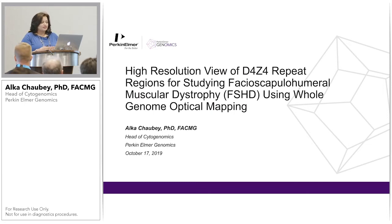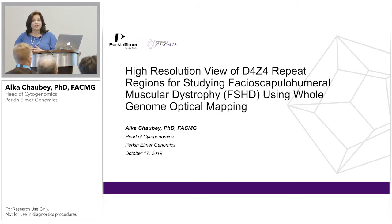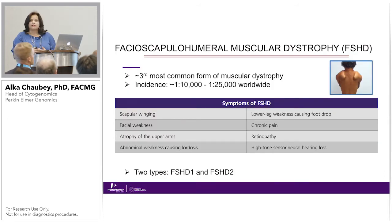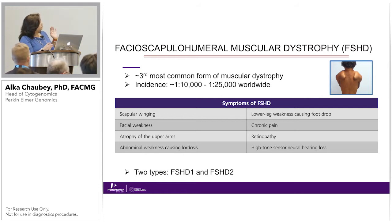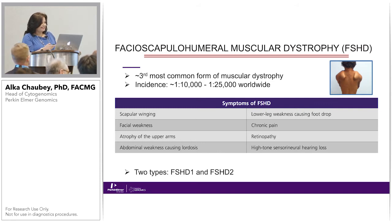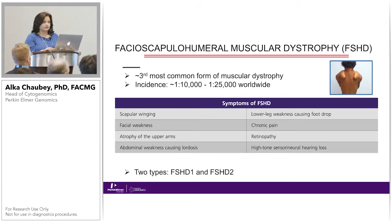Facioscapulohumeral muscular dystrophy — and for the remainder of the talk I will just say FSHD — is the third most common form of muscular dystrophy, and the incidence is comparable with a lot of rare genetic disorders.